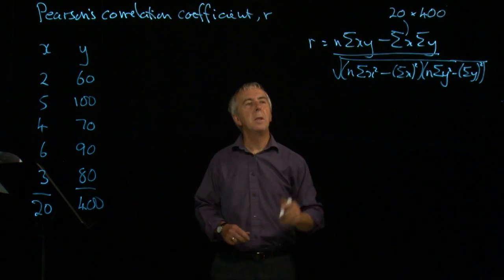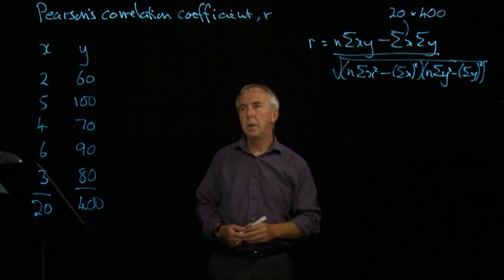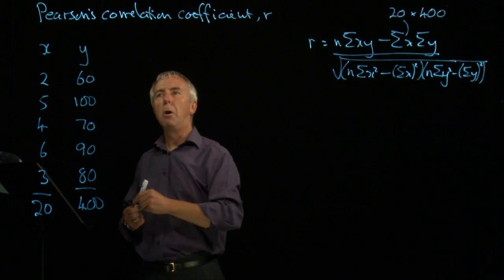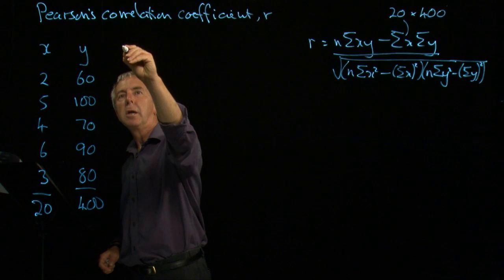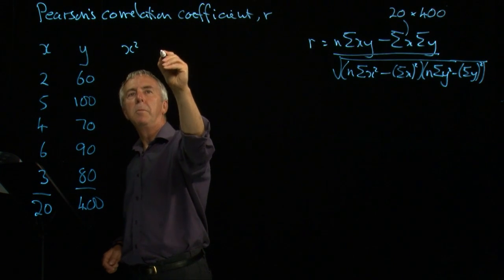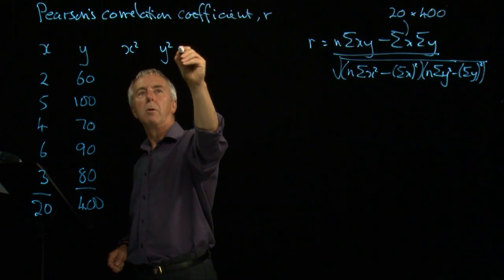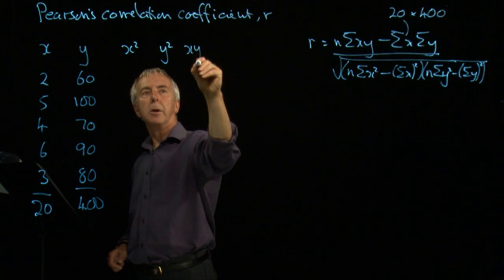We need to work out the other totals, though. And so the best way to do this is to create new columns here. We need an x squared column, a y squared column, and an xy column.